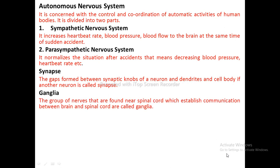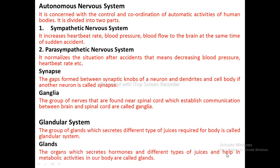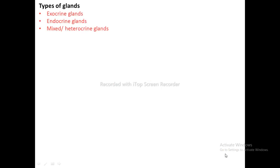Glandular System: The group of glands which secrete different types of juices required for the body is called the glandular system. Glands: The organs which secrete hormones and different types of juices and help in metabolic activities are called glands. Types of Glands: exocrine glands, endocrine glands, and mixed heterocrine glands.